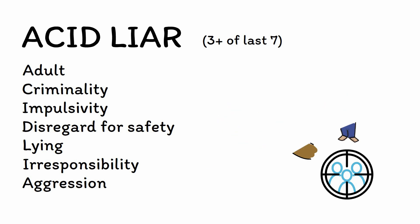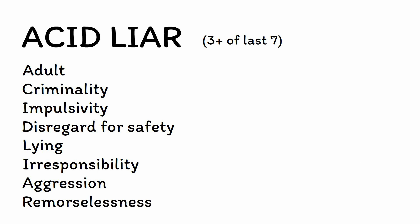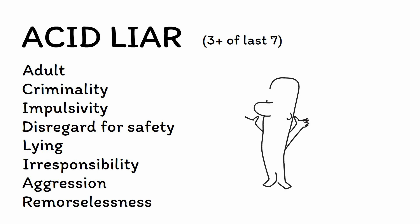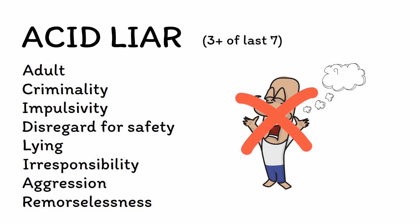Finally, R is for remorselessness. Some people with ASPD will show a lack of remorse for their actions, such as trying to rationalize aggressive behavior by saying that the other person deserved it or that they had no choice but to act that way. However, this is not necessarily diagnostic, and some patients do show remorse, especially when they have acted impulsively.